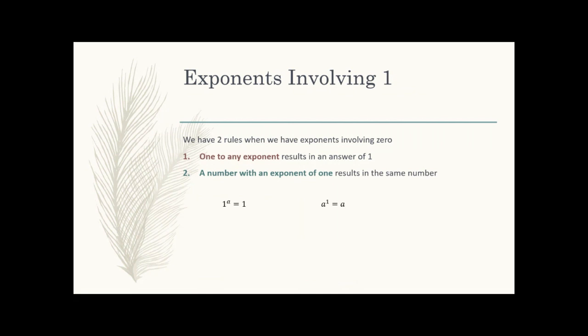When you have one as the base, one to any power always gives you one, because you're just multiplying one times one however many times — it's still one. If the exponent is one, it doesn't do anything — you end up with the same thing you started with. This second rule comes up a lot when we get into algebra, particularly quadratics and exponential expressions starting around week 4. An exponent of one is essentially the same as having no exponent at all.